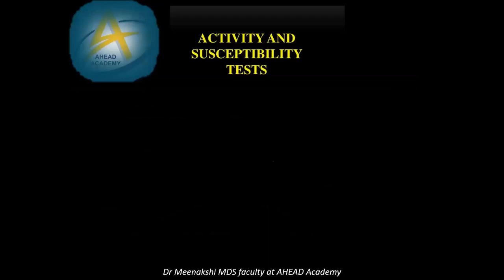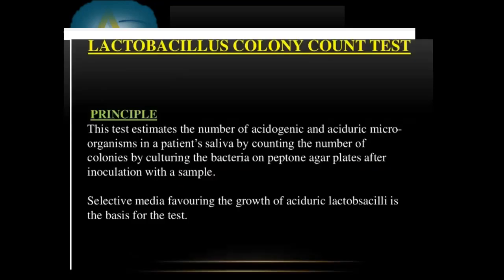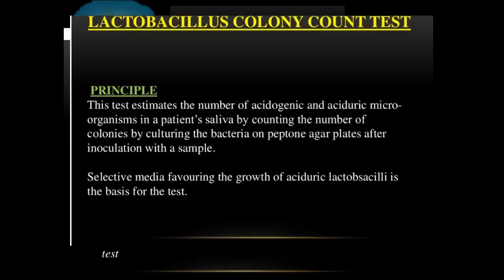It should be applicable to any clinical setting without being invasive in nature and it should be less expensive. Caries activity tests are classified into the count method and evaluation of virulence. Evaluation of virulence includes: Nider colorimetric test, enamel solubility test, calcium dissolution test, and salivary reductase test. Count method counts colonies — for example, Lactobacilli count test, Streptococcus mutans level in saliva, swab test, saliva buffer capacity test, and the Alban test.